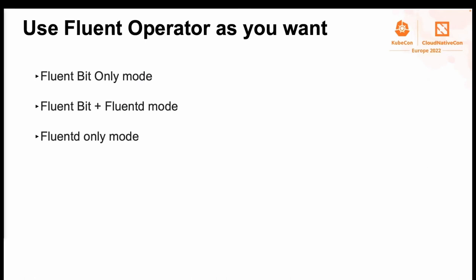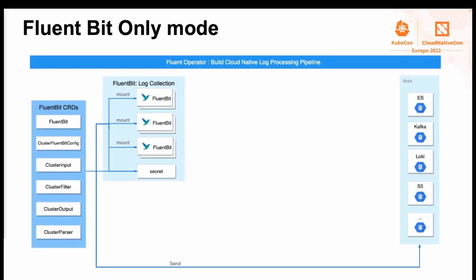Fluent Operator includes CRDs and controllers for both FluentBit and FluentD, allowing you to configure your logging pipeline in these three modes. In FluentBit-only mode, if you just need to collect logs and send them to final destinations, all you need is FluentBit. As you can see from this graph, the FluentBit CRD ClusterFluentBitConfig selects cluster-level plugins and generates the final configuration into a secret. The other plugins like ClusterInput, ClusterFilter, ClusterOutput, and ClusterParser are selected via label selectors.